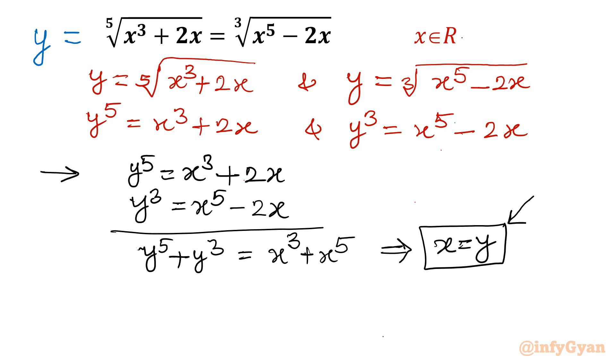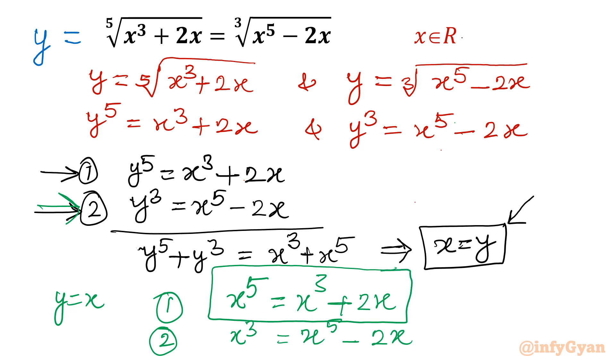I will write here, suppose this is equation 1 and this is equation 2. Let me put y equal to x. So equation 1 will become x power 5 equal to x cube plus 2x. Or you can write equation 2 also, I will write x power 3 equal to x power 5 minus 2x. Both equations are same. If I will shift this minus 2x to the left, that is our equation number 1. So only need to solve any one of the equation.